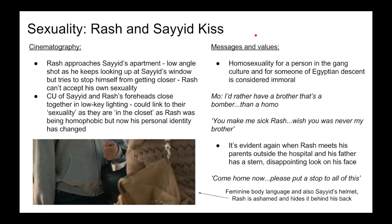Regarding the theme of sexuality: when Rash and Saeed kiss, Rash approaches Saeed's apartment and there is a low-angle shot as he keeps looking up at Saeed's window but tries to stop himself from getting closer, going back and forth. This creates a romantic cliché scene reminiscent of Troy Bolton and Gabriella, or Romeo and Juliet. There's also a close-up of Saeed and Rash's foreheads close together in low-key lighting, showing that their sexuality is still in the closet and Rash is still uncomfortable exposing himself in the crime environment. His personal identity is changing as he has gone back to Saeed, taking back his earlier homophobic remarks — as he himself is a homosexual. Homosexuality for someone in gang culture was not accepted, and for someone of Egyptian descent it was considered immoral due to traditional Egyptian values.